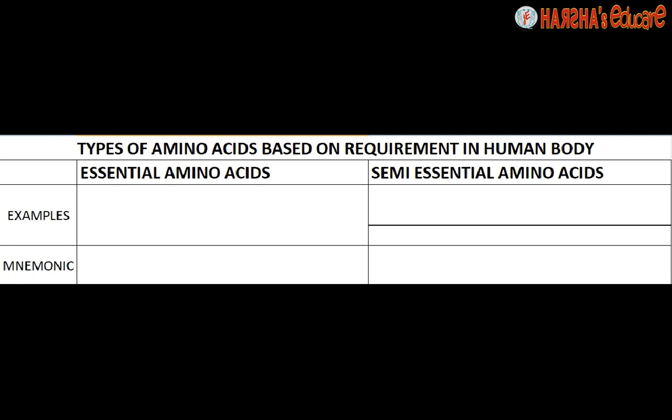Essential amino acids are those which are required in both children and adults. The number is seven, and I have devised a mnemonic so that you can remember them and answer any question regarding this. We'll also simultaneously discuss semi-essential amino acids, which are three in number for children and two in number for adults — and we'll see what the controversy is.